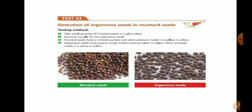Mustard seeds can be adulterated with argemone seeds. Take a small quantity of mustard seeds on a glass plate and examine them visually. Mustard seeds have a smooth surface, whereas argemone seeds look different when present.